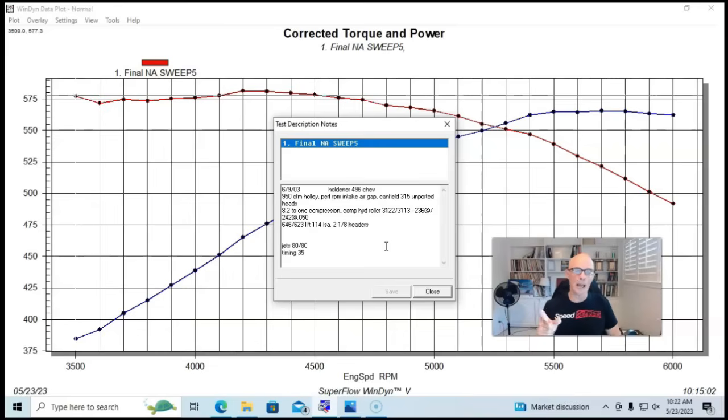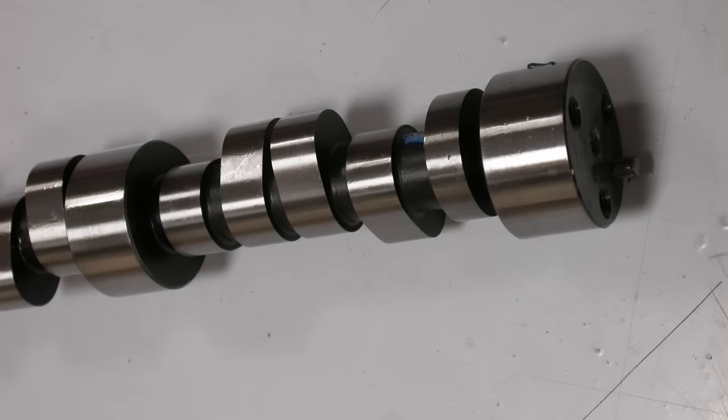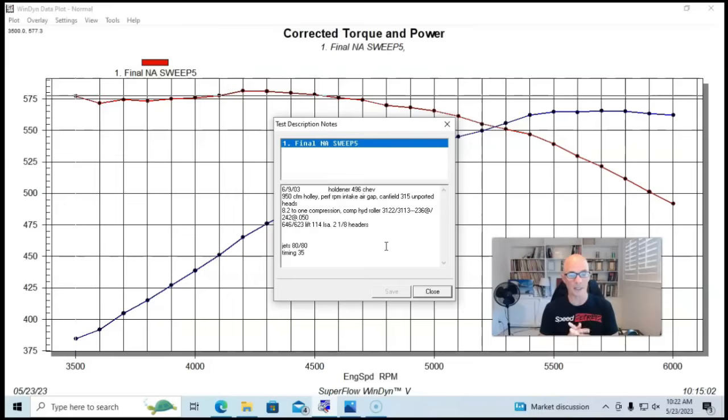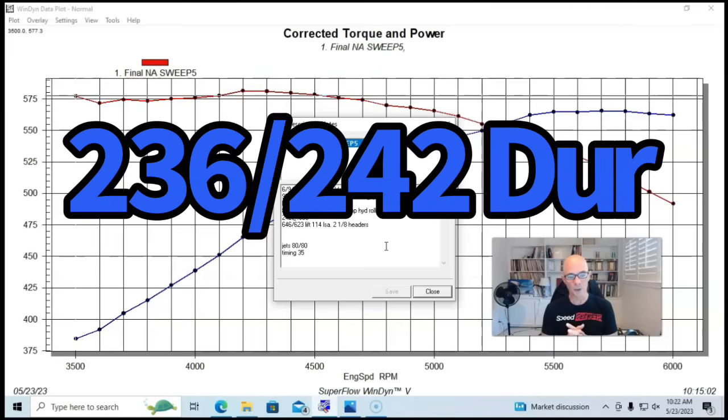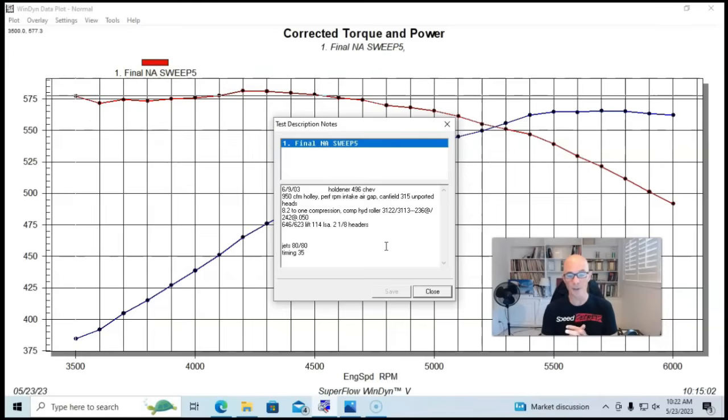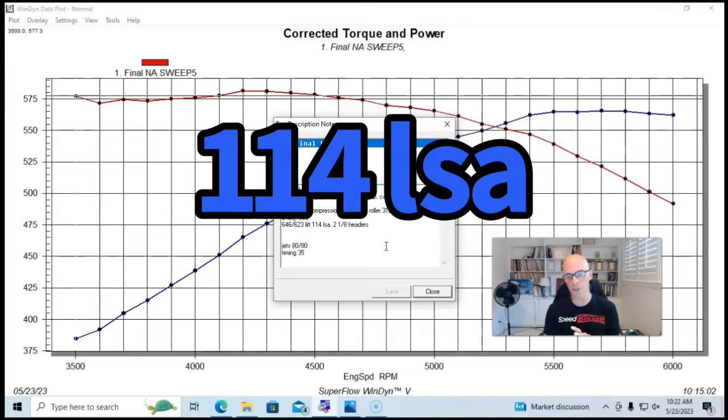So to improve the power output, we also changed the camshaft. We put a Comp hydraulic roller cam in it. It was a 646, 623 lift. It was a 236, 242 at 50 duration and 114 degree lobe separation angle.